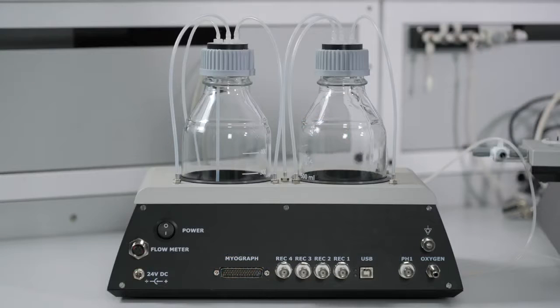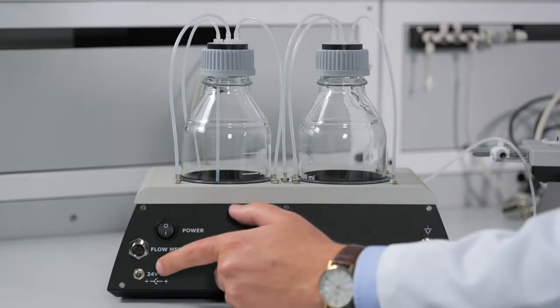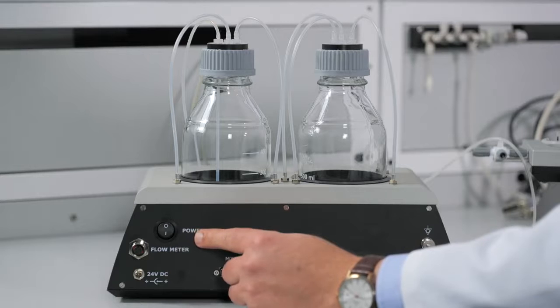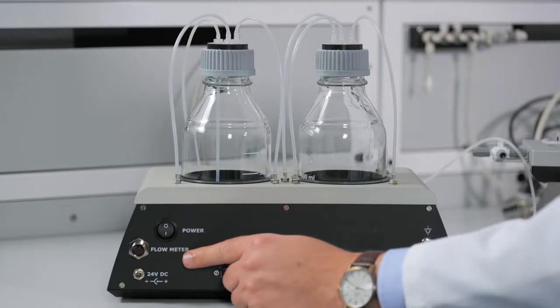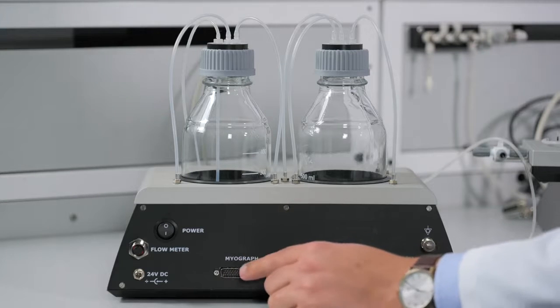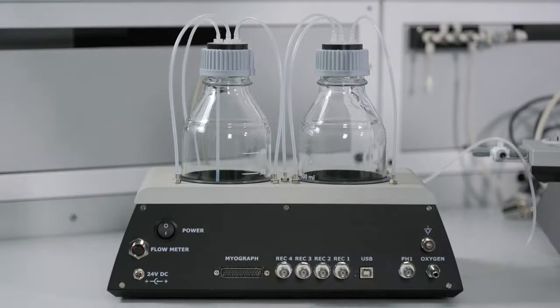The connections on the back of the interface will allow you to fully utilize the system. There is a connection for the power source and a power switch. There's a connection for the flow meter to accurately measure the flow through your chamber, and a connection for the MyoGraph cable that will go to your chamber and allow it to communicate back and forth.